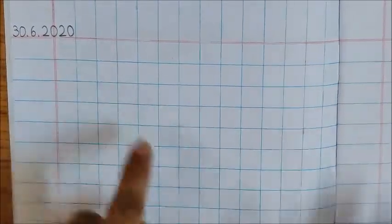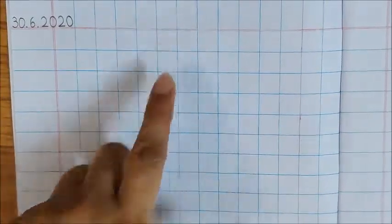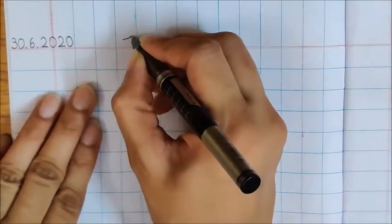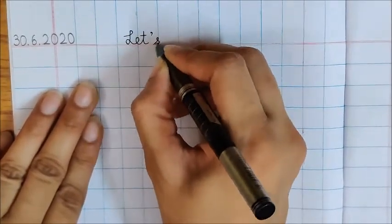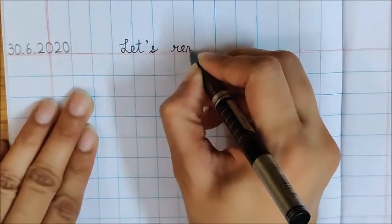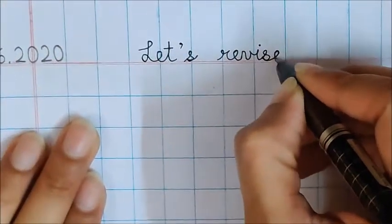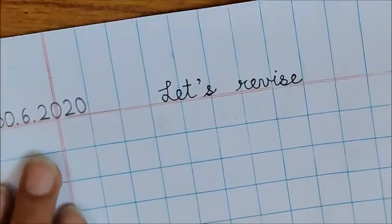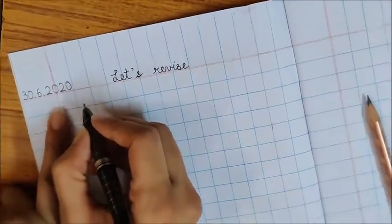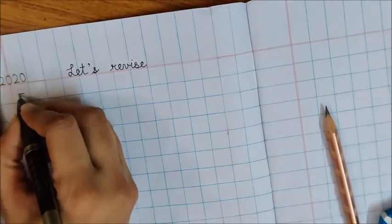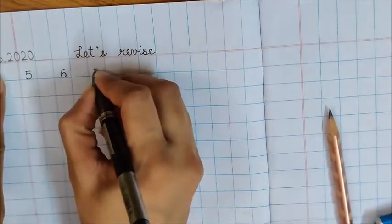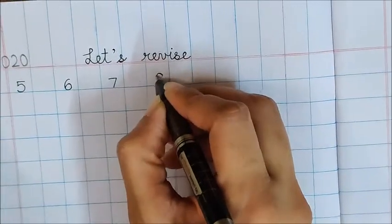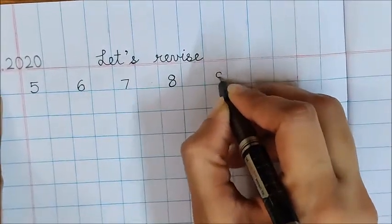Now after writing the date, ask your mama to do this setting here for you. Just like she did yesterday. On the red line, write, let's revise. Now dear mama, please write down in this box. 5, 6, 7, 8 and 9.